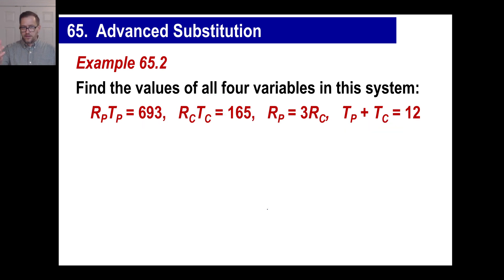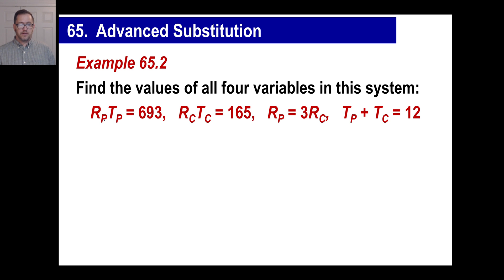Let's try another one. This one — the rate of a Pontiac... let's say the Prius — times the time of the Prius equals 693 miles. The Chevy goes 165 miles. The rate of the Prius is three times as fast as the rate of the Chevy. The time of the Prius plus the time of the Chevy is 12.